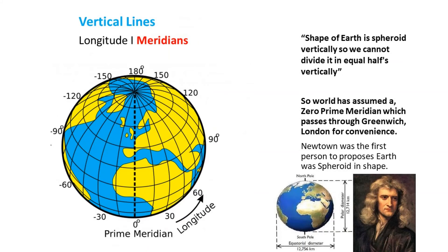Now we can go to longitudes. Longitudes are called meridians of longitude. The shape of the earth is an oblate spheroid vertically, so we cannot divide it into equal halves vertically. An oblate spheroid, or geoid, is a sphere whose top and bottom are squeezed inwards and the sides are bulging out. Newton was the first person to propose that the earth was an oblate spheroid in shape.